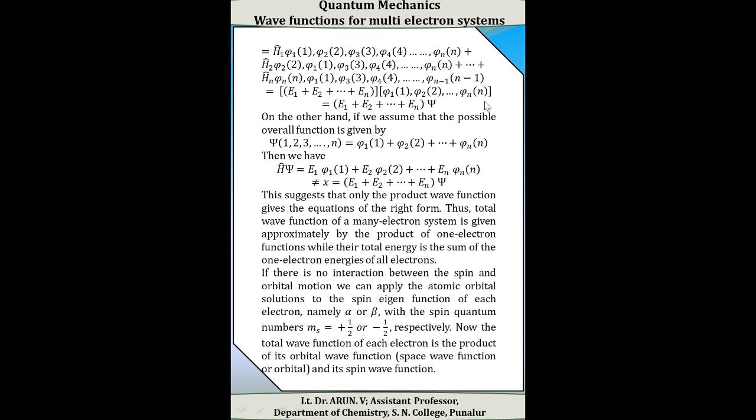On the other hand, if we assume the overall wave function is given by psi(1, 2, 3, ..., n) equal to φ₁(1) + φ₂(2) + ... + φₙ(n), then H·psi equals E₁φ₁(1) + E₂φ₂(2) + ... + Eₙφₙ(n), which is not equal to (E₁ + E₂ + ... + Eₙ)·psi. This suggests that only product wave functions give equations of the right form. Thus, the total wave function of a many-electron system is given approximately by the product of one-electron functions, while the total energy is the sum of the one-electron energies of all electrons.